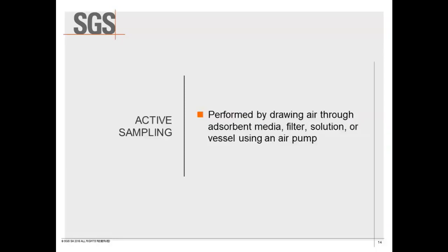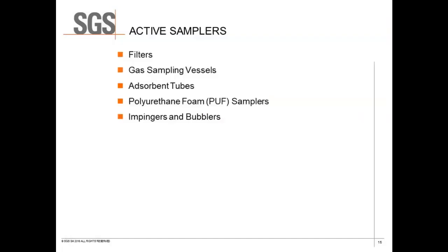Active sampling is performed by drawing air through an adsorbent media, filter, solution, or vessel, typically using an air pump or, in the case of a canister, under vacuum. Active samplers primarily consist of filters, gas sampling vessels, adsorbent tubes — broken into thermal desorption tubes and solvent desorption tubes — polyurethane foam PUF samplers, and impingers and bubblers.